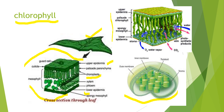The chloroplast is a double membrane organelle. There is an outer membrane and an inner membrane. Inside these are stacks which are called thylakoids. It is inside these thylakoids that the chlorophyll pigment is found.